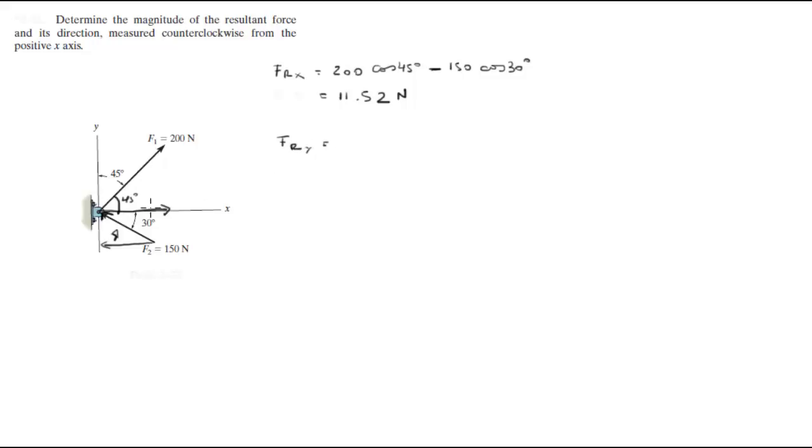Now the resultant force in the y components, we're going to add the y component of F1, this is F1y, and this is the y component of F2. They're both going up so they're going to add up, they're not going to cancel each other out. To calculate those you do 200 sine of 45 degrees plus, because they're both going on the positive y direction, 150 sine of 30 degrees. So when you add these two together you're going to get 216.42.